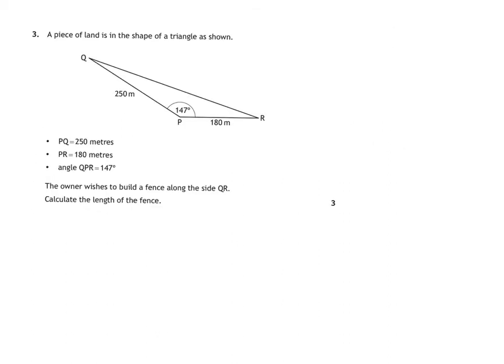Right, number three. A piece of land is in the shape of a triangle as shown. PQ is equal to 250 metres, PR is 180 metres, and angle QPR is 147. The owner wishes to build a fence alongside QR. Which is this one here. We need to calculate the length of the fence.